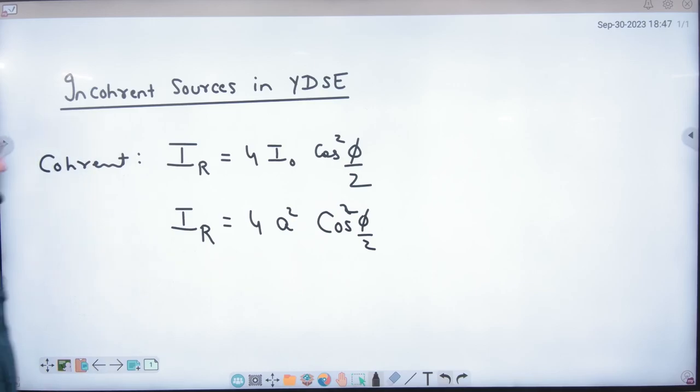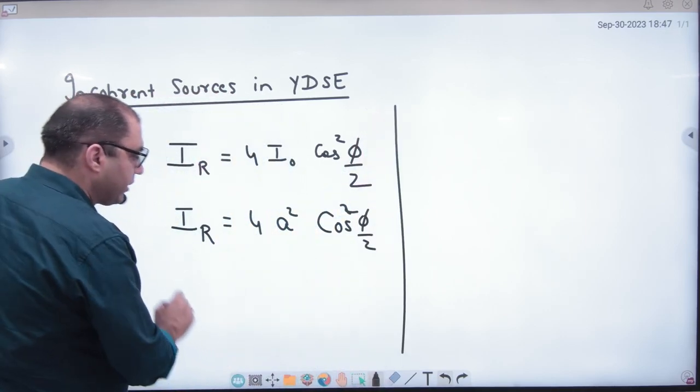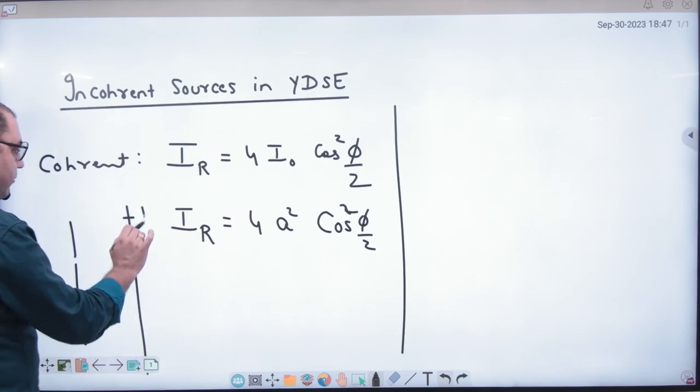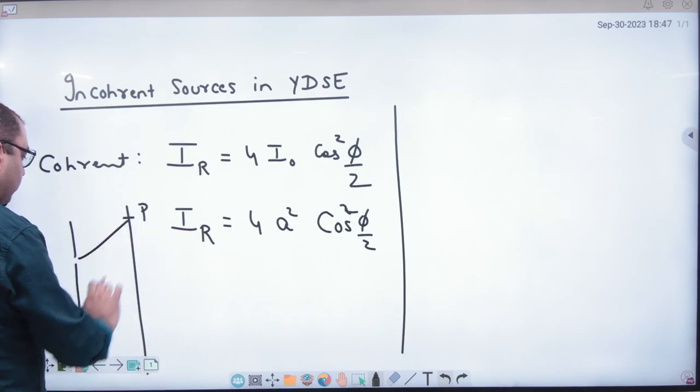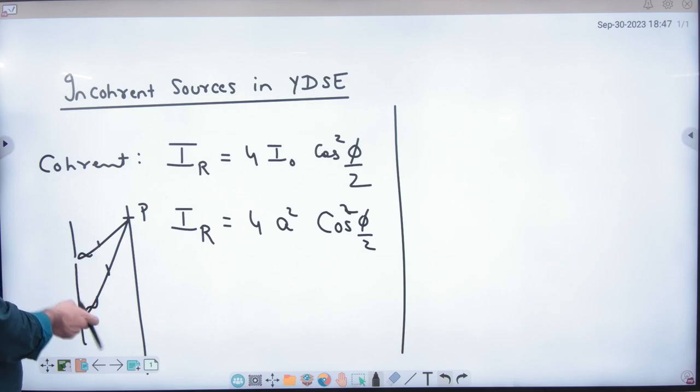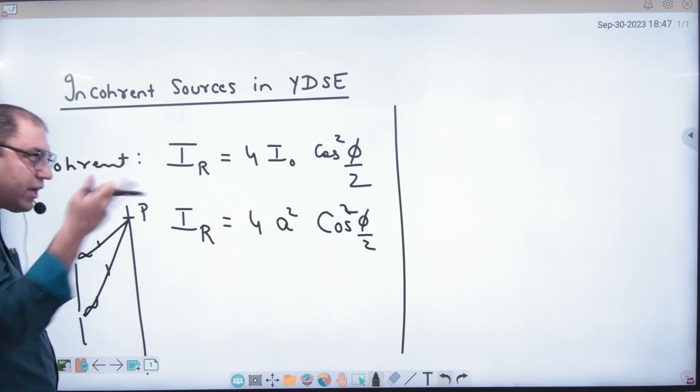What is the problem of the coherent? What was the coherent? If you have two sources, in those sources, identical waves will be out here. If it is crest here, then the crest will be out here. If it is trough, then the trough will be out here. Incoherent is not a guarantee.